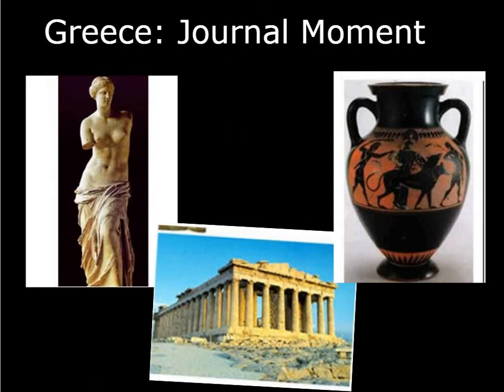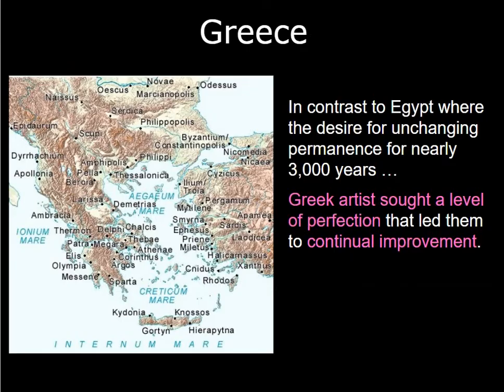All right, my little art friends. Let's talk about the art of Greece. Where's Greece? Right here on the map. Did you know where Ambrosia was? I didn't, but there it is. There's a big difference between Egyptian art and Greek art. Egyptian art tried to keep everything the same for like 3,000 years. They didn't want any changes, but the Greek artists were trying to reach a level of perfection, and we're going to talk about that in a minute.